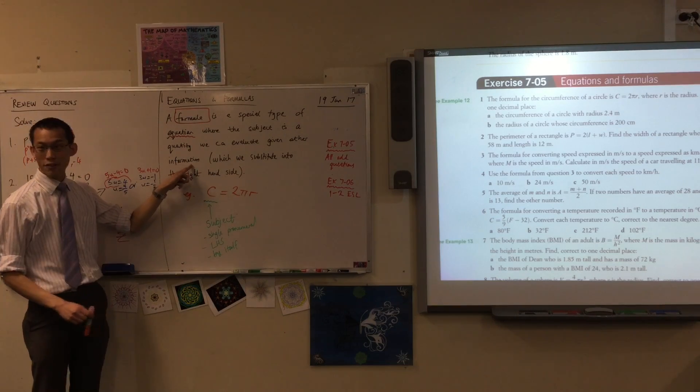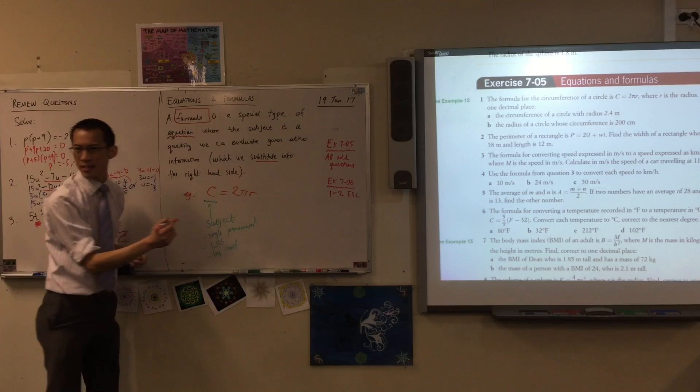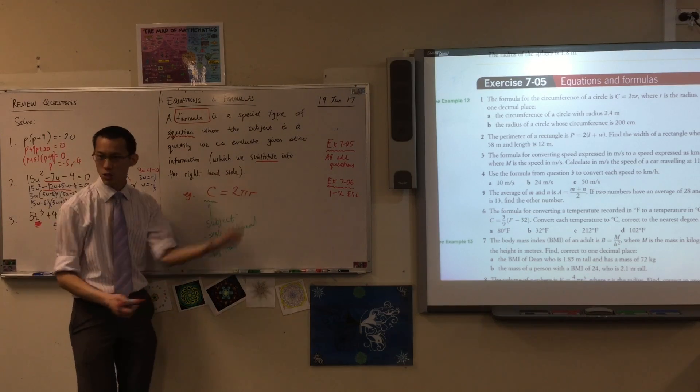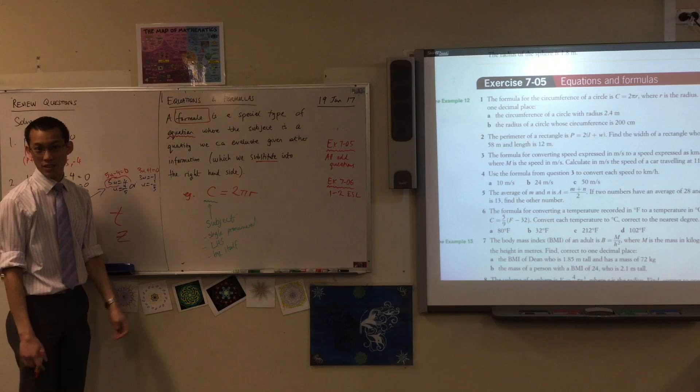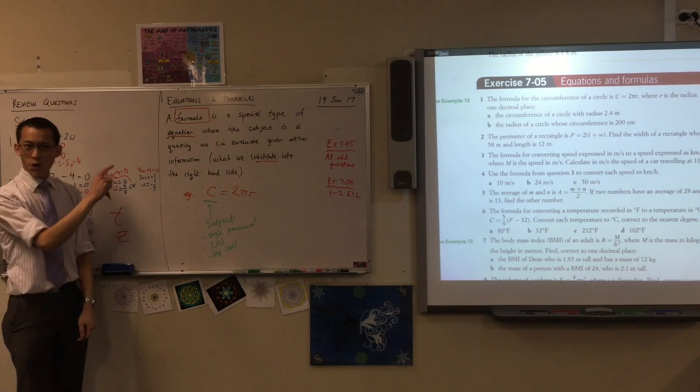So once you find the radius, you can substitute it in, and that lets you evaluate the circumference. You take your other information like radius and then you substitute it—we know what that is, right? Take this out, swap it for the correct value into the right-hand side. Everything you need to put is in the right-hand side.